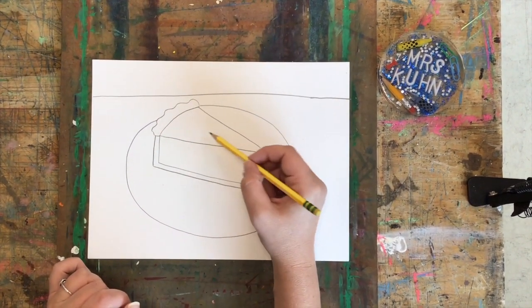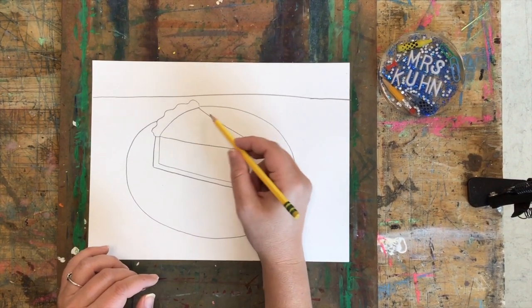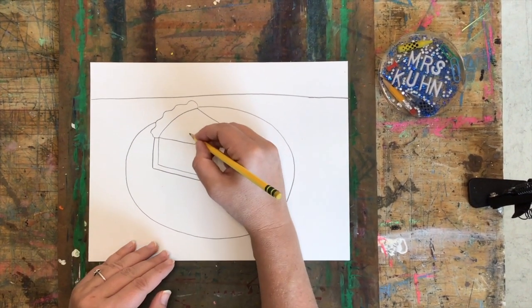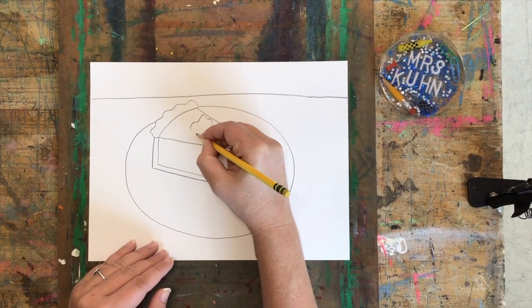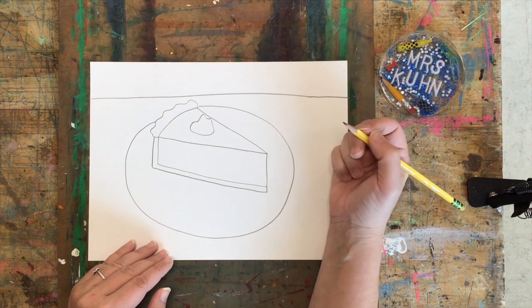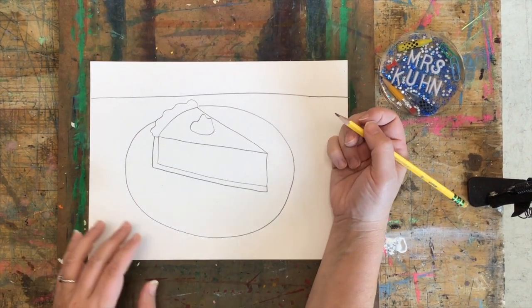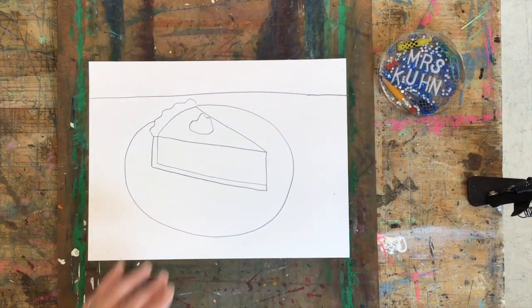You don't have to, but you can if you want, add a little dollop of whipped cream by drawing just sort of like a little blobby shape on top. You don't have to do that, but if you would like to, you can. And then we're going to add our shadow.